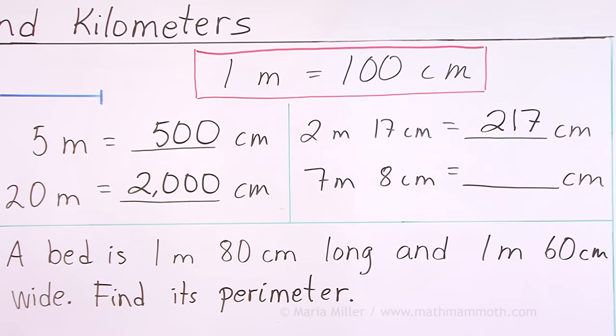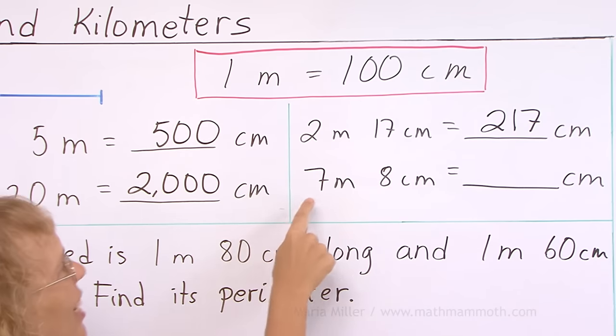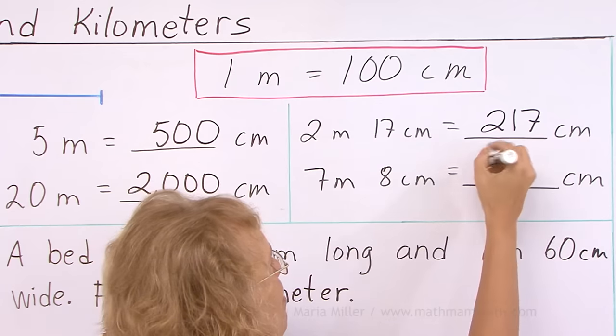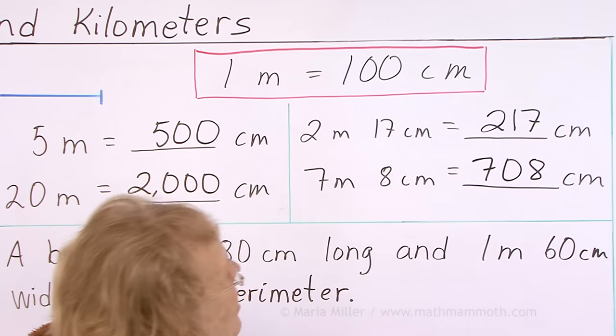Then 7 meters, 8 centimeters. The 7 meters would be 700, right? So 700 plus 8, 708 centimeters.